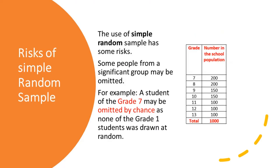However, though the chance of being selected is equal for each member of the population, there is also a risk in simple random sampling. For instance, it might happen that by chance a person from a significant group within that population does not get selected.